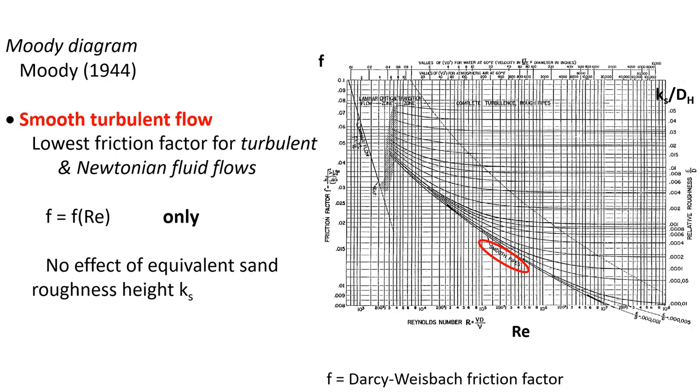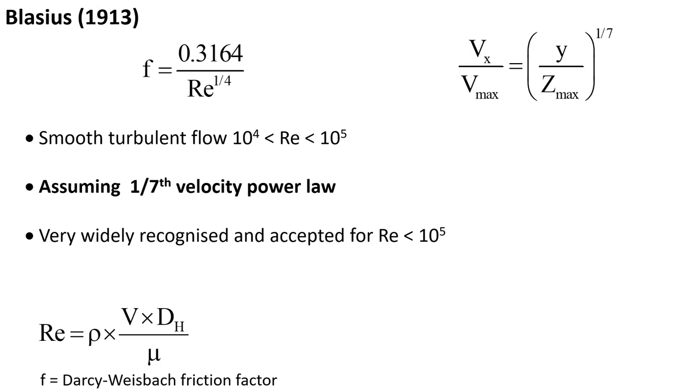The first seminal contribution to smooth turbulent flow is the work of Heinrich Blasius in 1913. He showed that there is a very simple relationship between the Darcy friction factor and the Reynolds number for smooth turbulent flow with Reynolds number up to 10^5, assuming a 1 over 7 velocity power law. This result is widely recognized and accepted, with Reynolds number up to 10^5, even today in 2023.